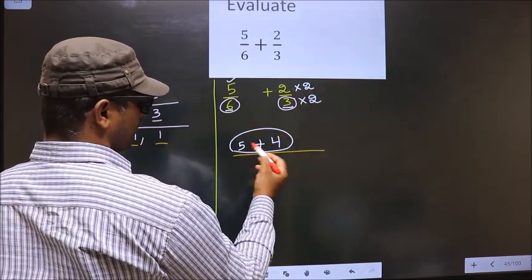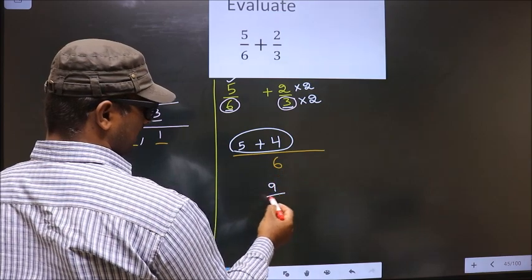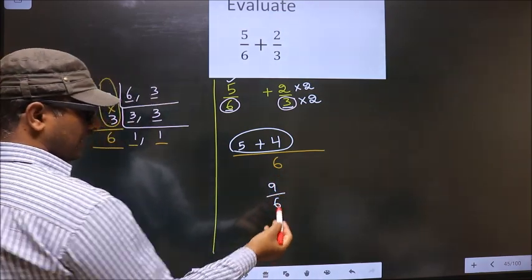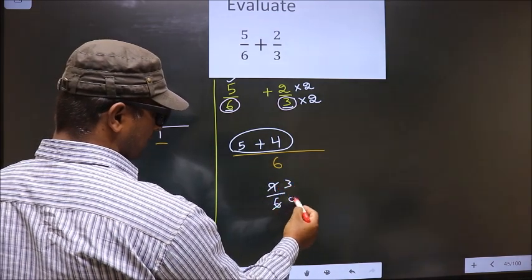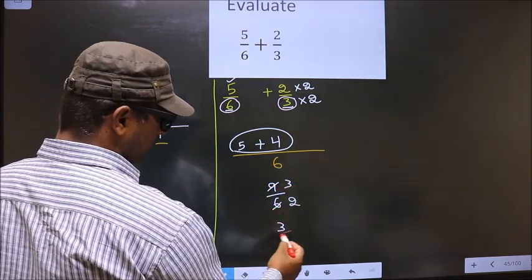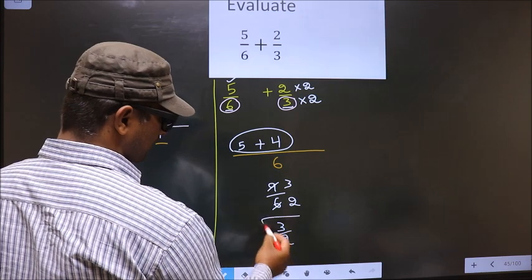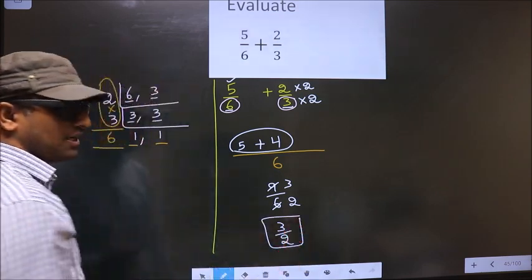Now 5 plus 4 is 9 by 6. I will cancel in 3 table. 3 3s, 3 2s. So we got 3 by 2. This is our answer.